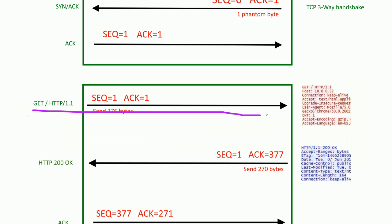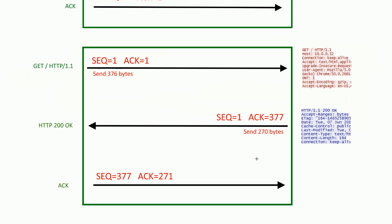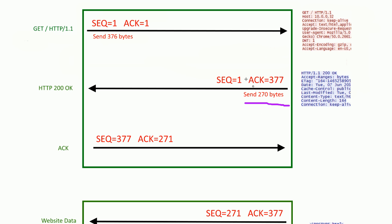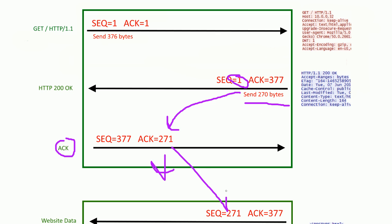The server sends the GET request response — HTTP OK — with a payload of 270 bytes. Starting with one inclusive, we count up to 270. The client acknowledges that, saying it received 270 bytes and expects the next byte from the server to be 271. You can see this pattern going back and forth.